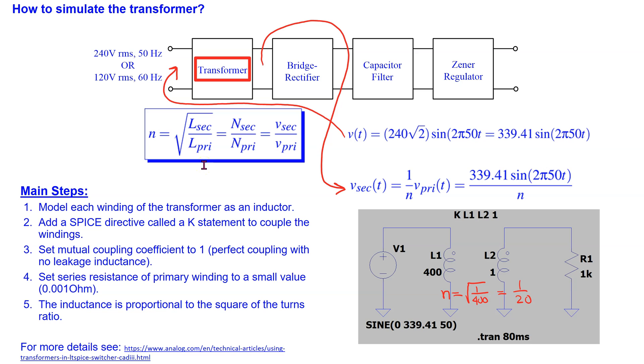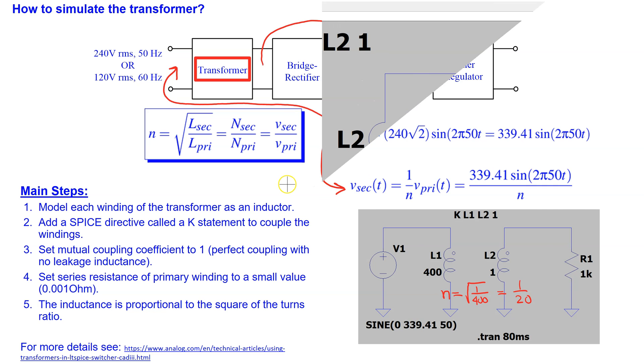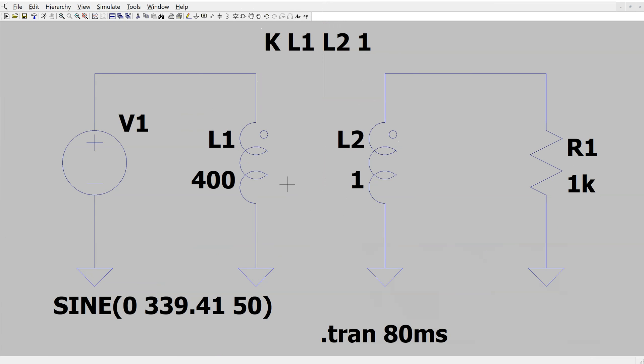The turns ratio is proportional to the square root of the inductances, and this can be used to set the turns ratio as desired. For instance, these values shown here give a turns ratio of 1 over 20. Using this principle, we can simulate a transformer in LTSpice.